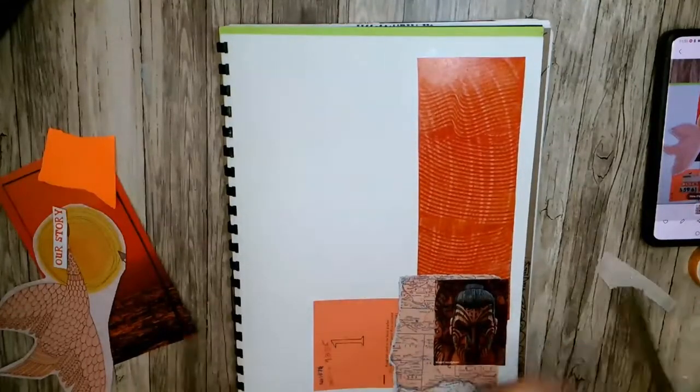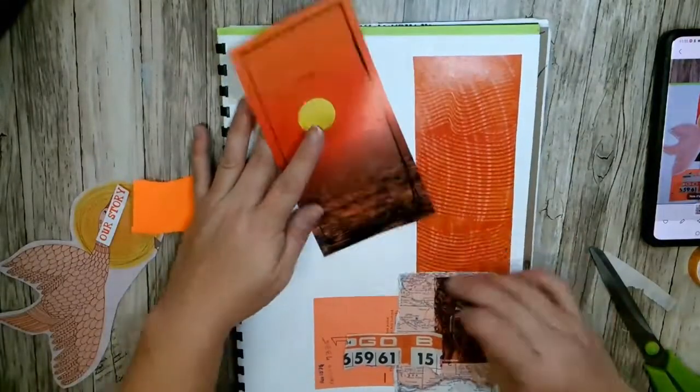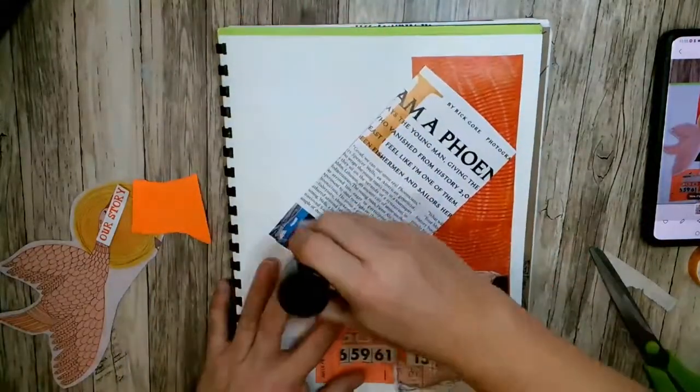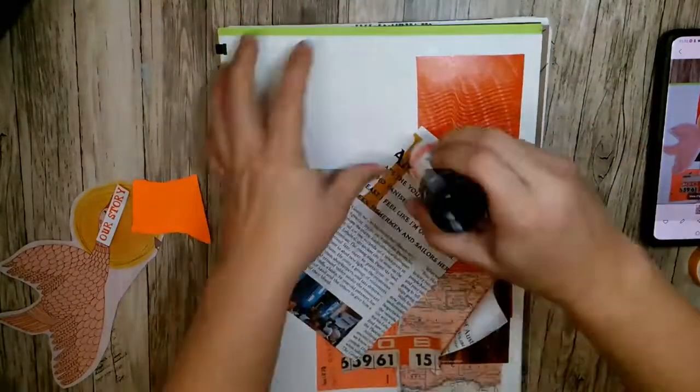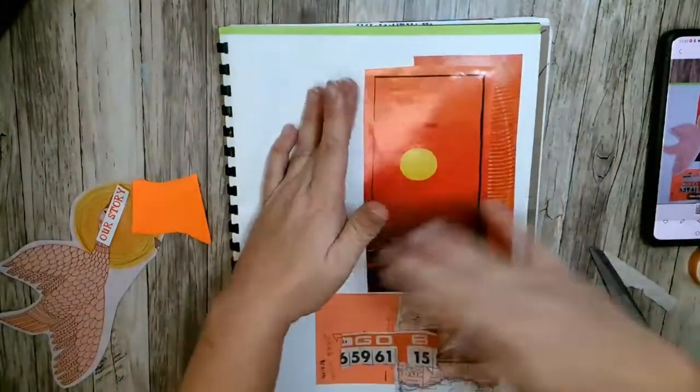If it doesn't match exactly the photograph that you took, that's fine too. You're just really looking for that negative space to be set aside for your writing. Here I made a little mistake or I wanted to change my idea, so I just peeled up the collage while it was still wet. That's a great thing about glue stick too.